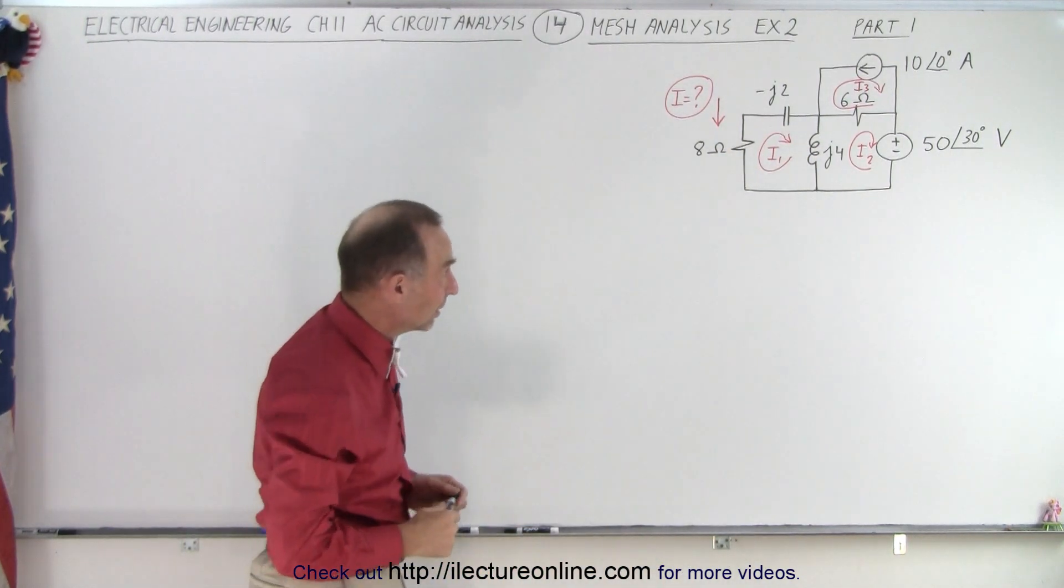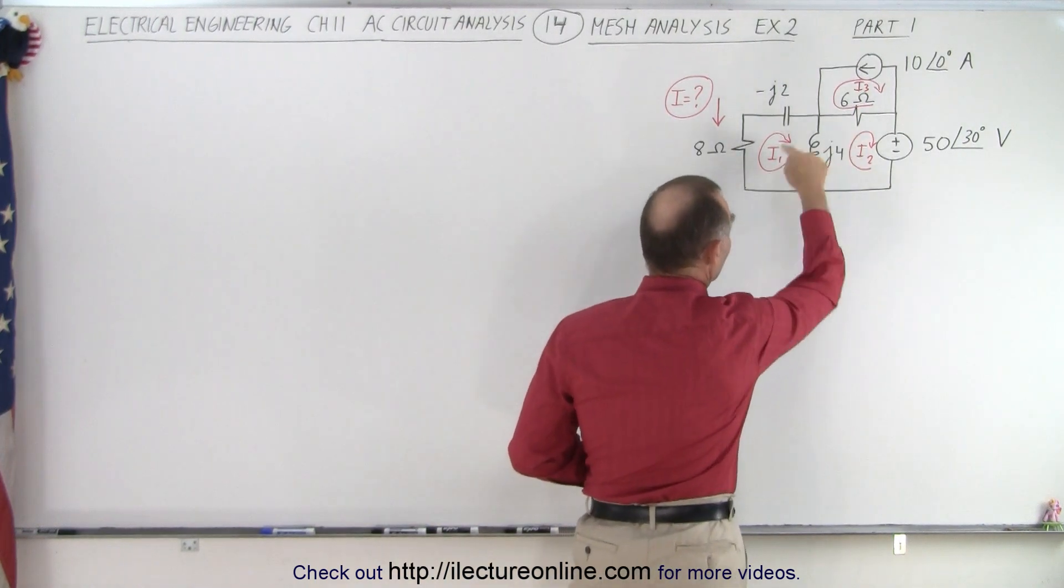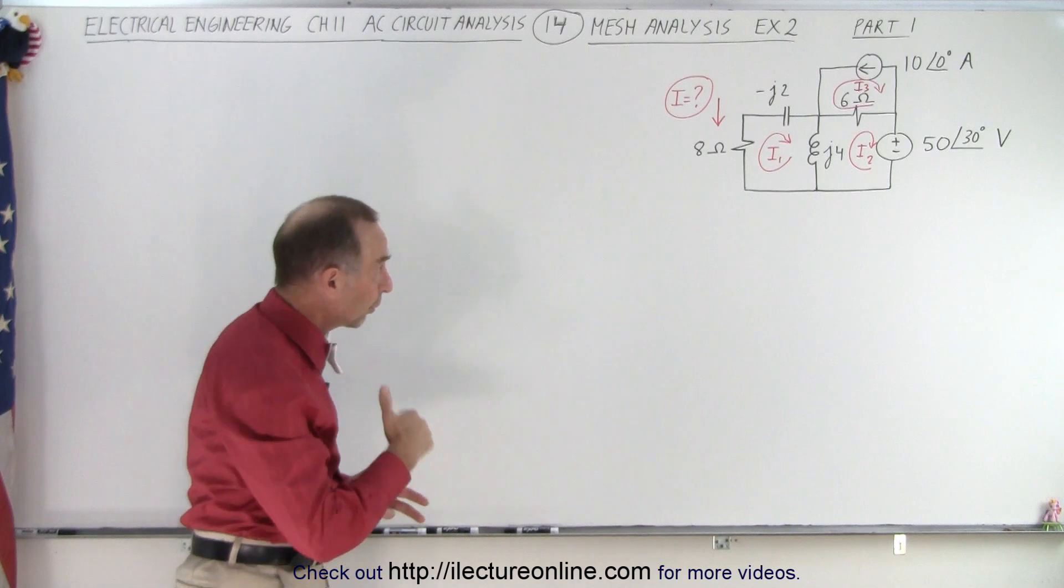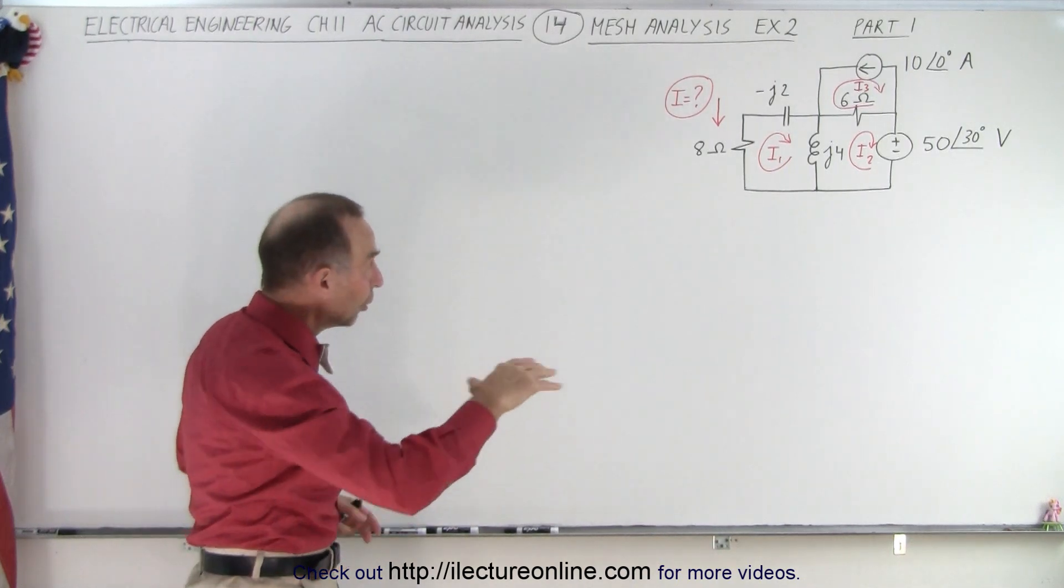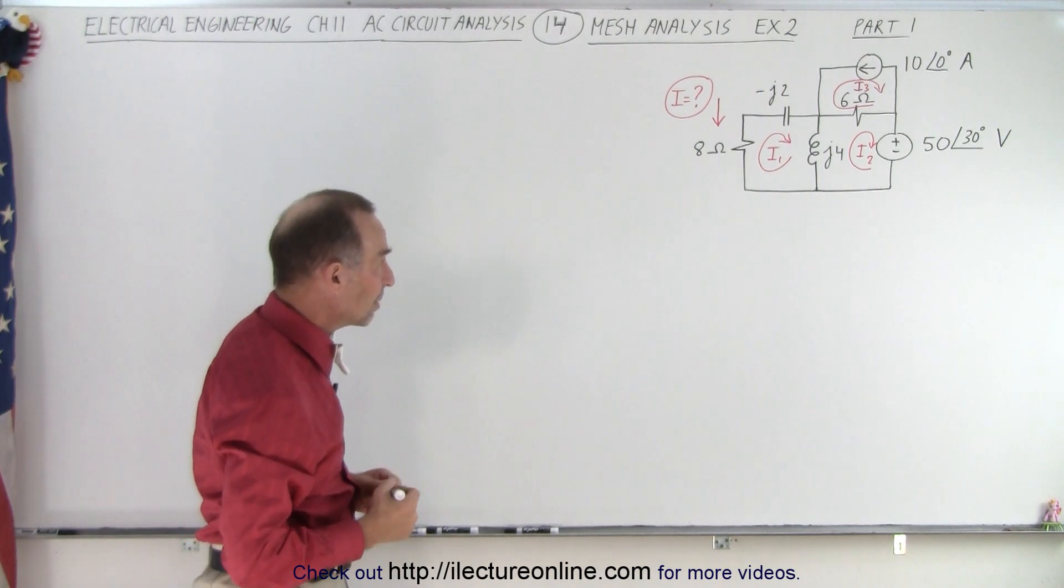Notice we already have the circuit set up. We have three meshes, therefore we have three currents inside the meshes. So what we're going to do is use the KVL method to add up all the voltage rises and drops around each of the three meshes.